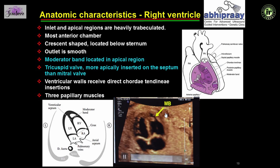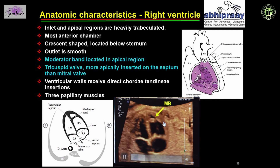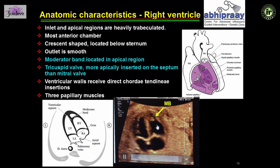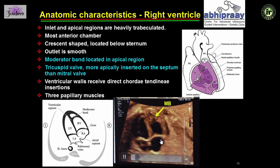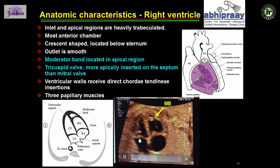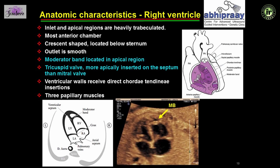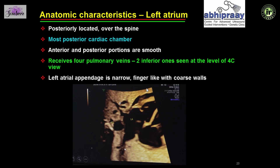The right ventricle is the anterior-most chamber of the heart, abutting the sternum. It has a moderator band in the apical region. The tricuspid valve is more apically inserted on the septum than the mitral valve, and the chordae tendinae are inserted directly over the apex. The left atrium is the posterior-most cardiac chamber, lying anterior to the aorta. It receives four pulmonary veins; however, in the four chamber view, you see the inferior ones opening into the left atrium.